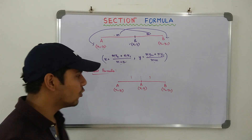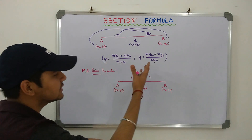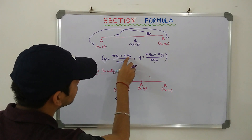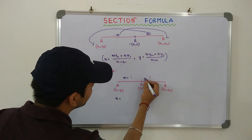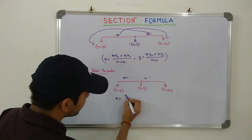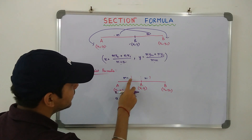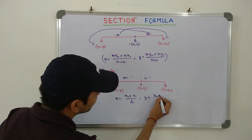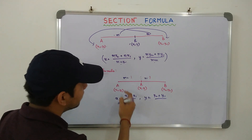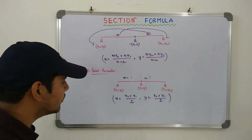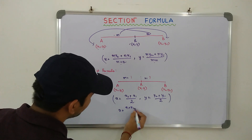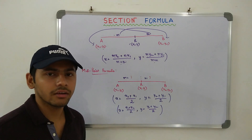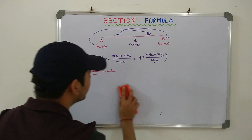Midpoint Formula gives us the coordinates of R. We can simply use Section Formula with m equal to 1 and n equal to 1. So x becomes 1 into x2 plus 1 into x1, divided by 1 plus 1, which is x1 plus x2 by 2. And y becomes y1 plus y2 by 2. This is the beautiful Midpoint Formula: x equals x1 plus x2 by 2, and y equals y1 plus y2 by 2. Now we'll move on to Centroid of a Triangle.